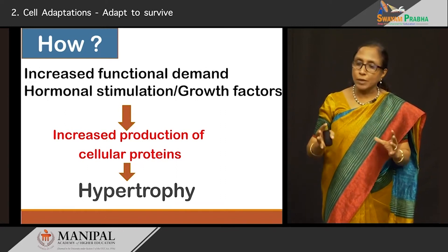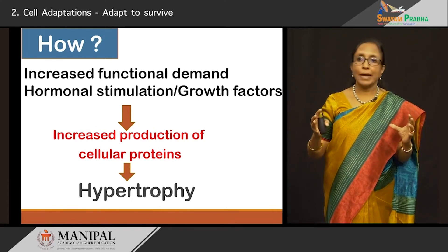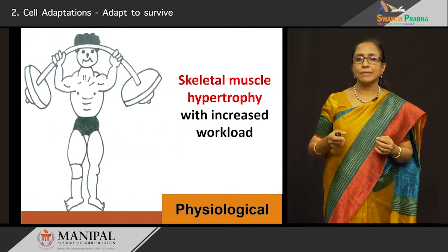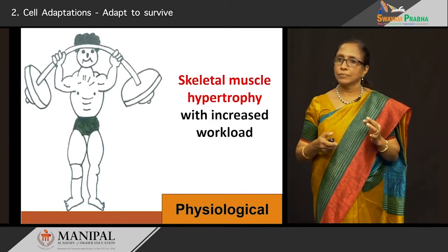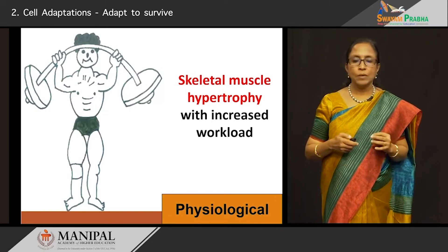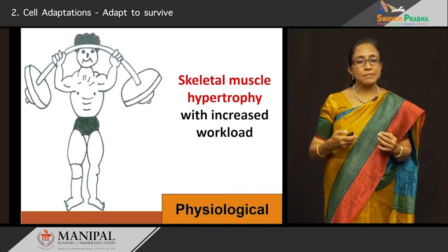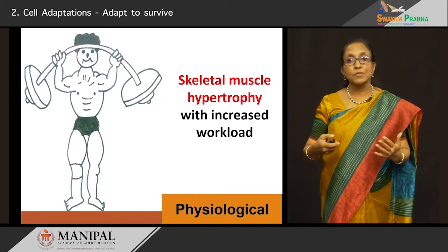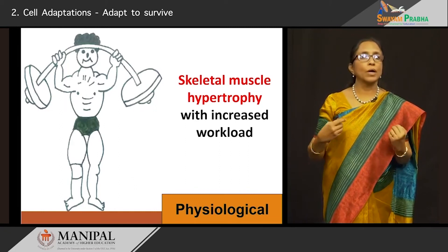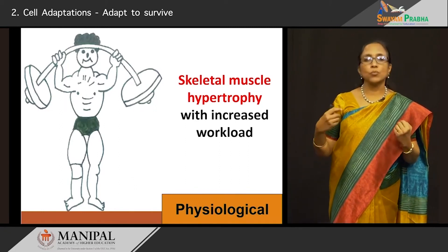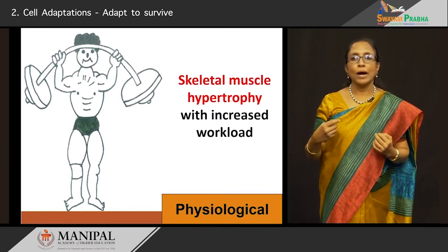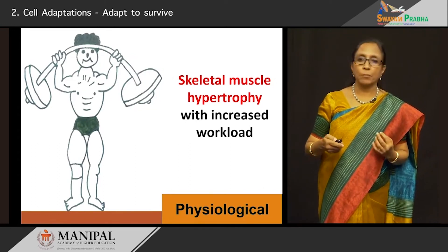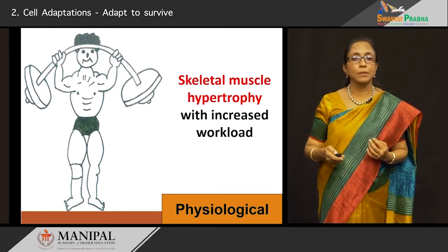When the cell becomes big, the cytoplasmic components become big and the nucleus also may show increased nuclear material. Looking at some physiological examples of hypertrophy — skeletal muscle hypertrophy is very common with increased workload. Bodybuilders are proud of their biceps, triceps, or pectorals. With regular, strenuous increased workout, the skeletal muscles undergo hypertrophy — each skeletal muscle fiber hypertrophies — and we see the musculature of bodybuilders. This is one typical physiological example.